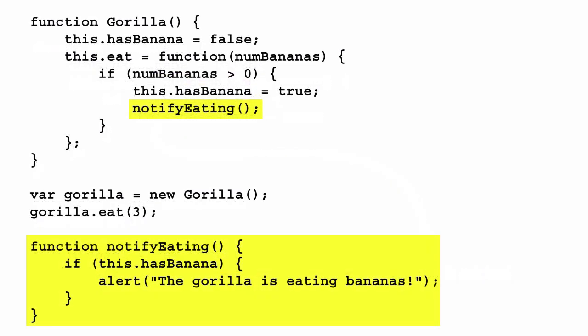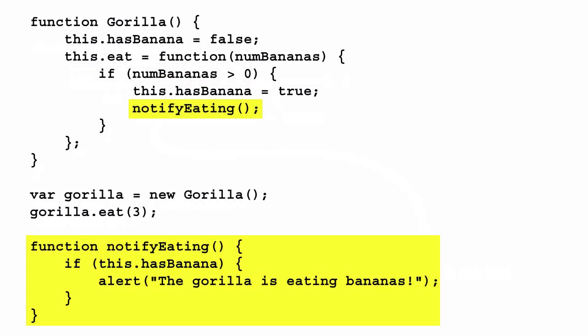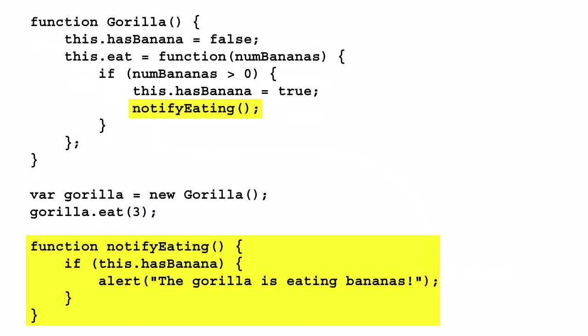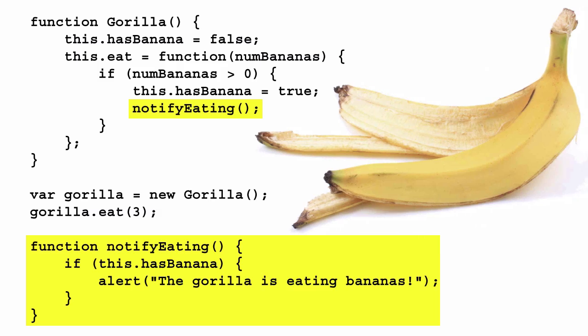Now let's change the code just a bit and call a function `notifyEating` from the `eat` method. This function is just going to check to see if the gorilla has a banana, and if so, alert us that the gorilla is eating a banana. It looks straightforward, but when you run the code, you won't see any alert message — and you won't see an error either. So you might wonder what's going on. Well, here we've found our first banana peel — we've slipped on `this`.